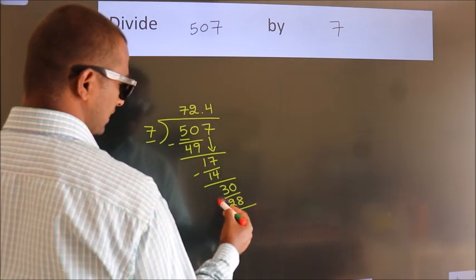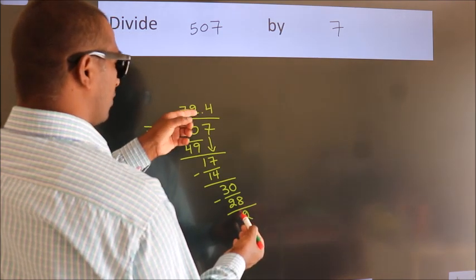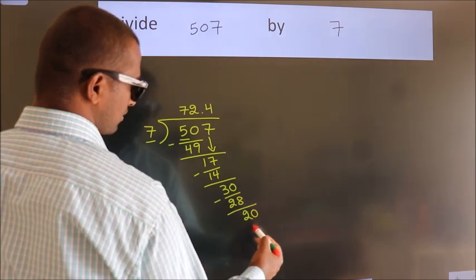Now we subtract. We get 2. After this, we already have the decimal, so directly take 0. So, 20.